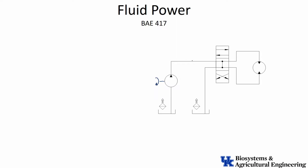As the fluid moves through the system it will have velocity and pressure, and that gives us the power. Mechanical power P_m equals torque times speed — we've seen that with engine torque-speed curves. Now we translate that into fluid power, represented as delta-P (pressure drop), which is analogous to torque, and flow rate Q, which is analogous to speed. So we have pressure and flow rate moving through the system.